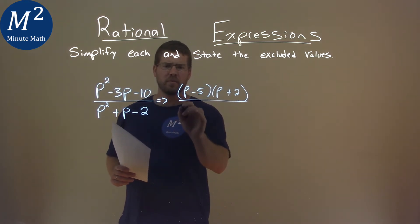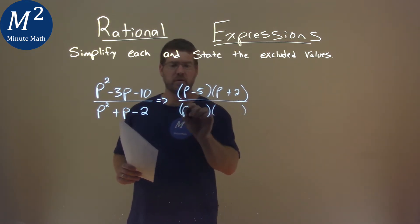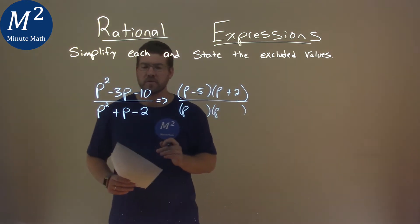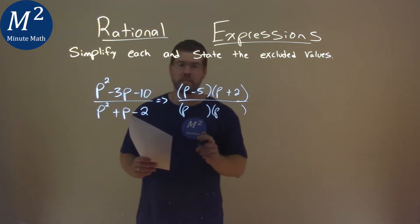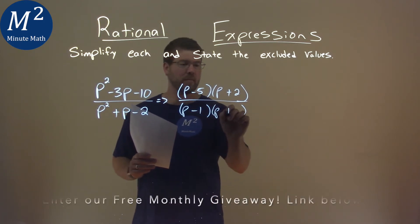Now we're going to do the same thing with the denominator. Factor it out if we can, and what two numbers multiply to be negative 2 but add to be positive 1. And that's going to be minus 1 and positive 2.